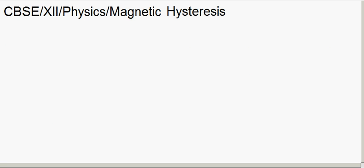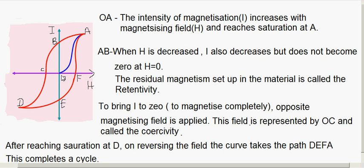A ferromagnetic substance, when kept in a magnetizing field, gets magnetized — it also becomes a magnet. If you increase the magnetizing field, as shown in the figure, initially from O, H is increased. It has been observed that when H is increased, I also increases, and this is shown by the curve OA. So in the beginning, when the field is increased, the intensity of magnetization I also increases with the magnetizing field.